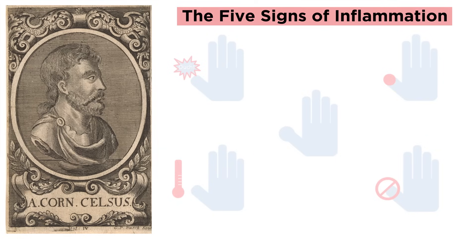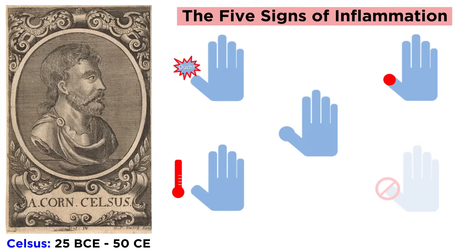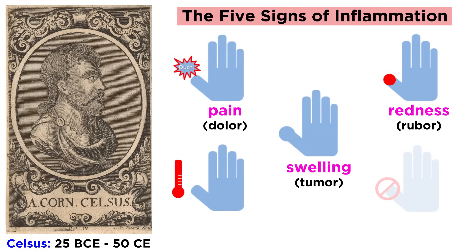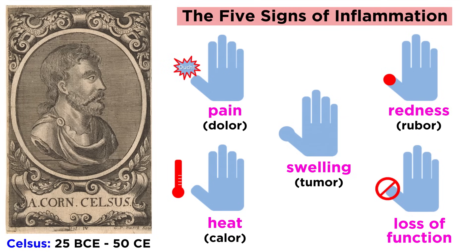There are five classical signs of inflammation. The first four were described by the Roman encyclopedist Celsus in the first century CE as pain, or in Latin dolor; redness, or rubor; swelling, or tumor; and heat, or calor. A fifth sign, loss of function, was added later.